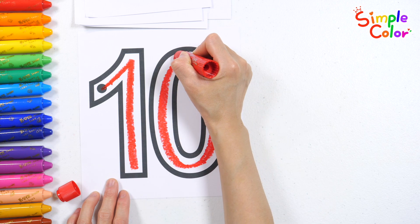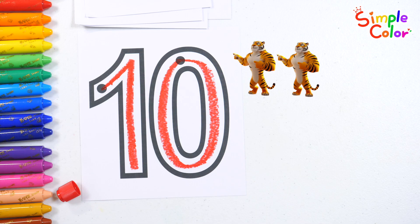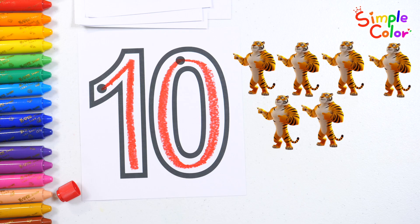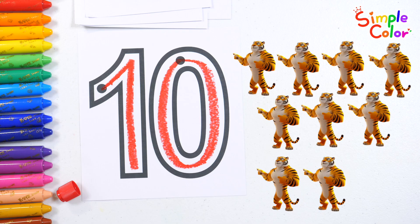Nine deer. Ten. One, two, three, four, five, six, seven, eight, nine, ten. Ten tigers.